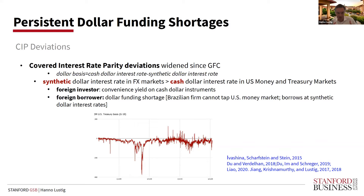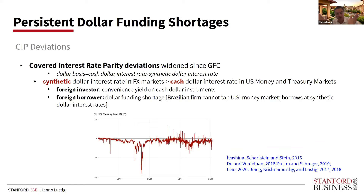There are two ways to interpret this. One is that foreign investors are willing to accept much lower returns because they earn a convenience yield on cash U.S. dollar instruments. On the other hand, this also means foreign borrowers experience a dollar funding shortage. Think of that Brazilian firm borrowing dollars — COVID hits, it no longer has export revenue in dollars, can't tap U.S. money markets, so it's forced to borrow at a higher synthetic dollar interest rate. The three-month Treasury basis has been negative since the GFC and occasionally widens quite a bit.